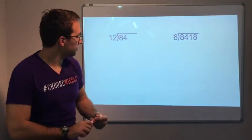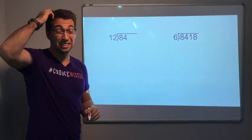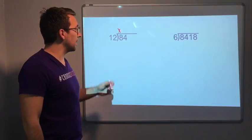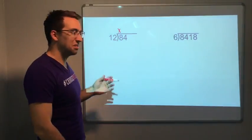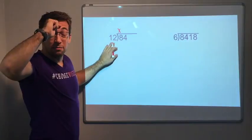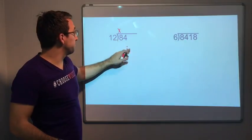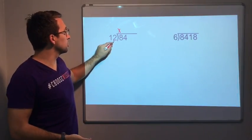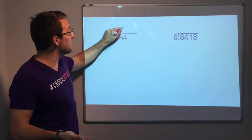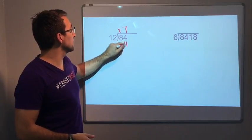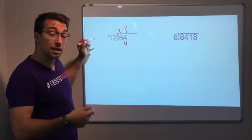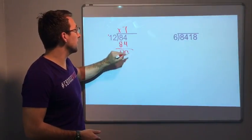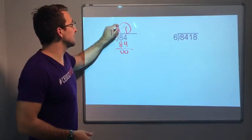Let's look at our last two examples. Twelve goes into — this is a two-digit divisor. Twelve does not go into eight, so that's an x, or zero, or nothing. Twelve times seven: two needs to go into four, so twelve times seven. Seven times two is fourteen, carry the one. Seven times one is seven, plus one is eight. Eighty-four minus eighty-four is zero. So our answer is seven.